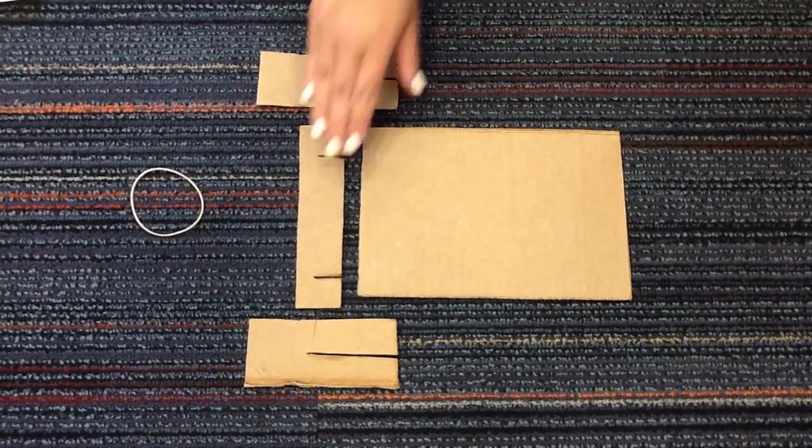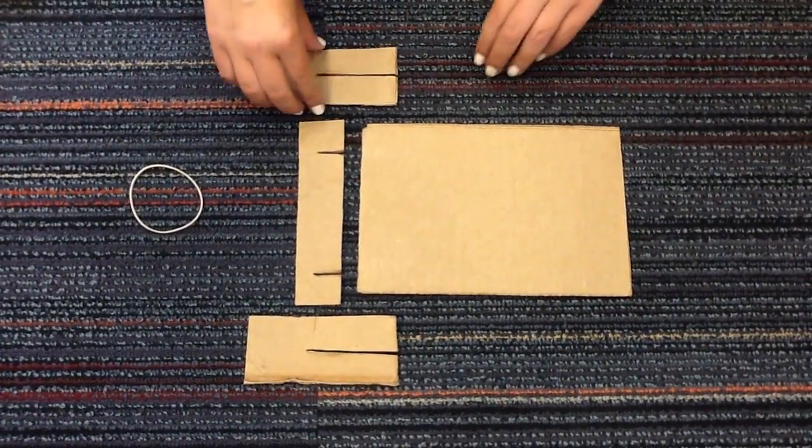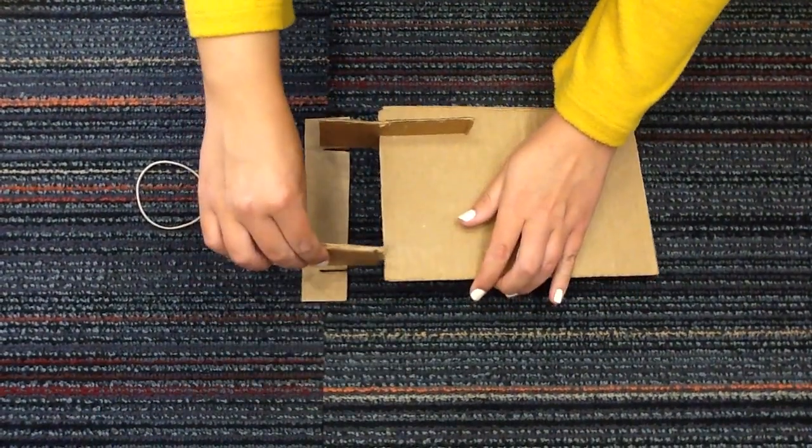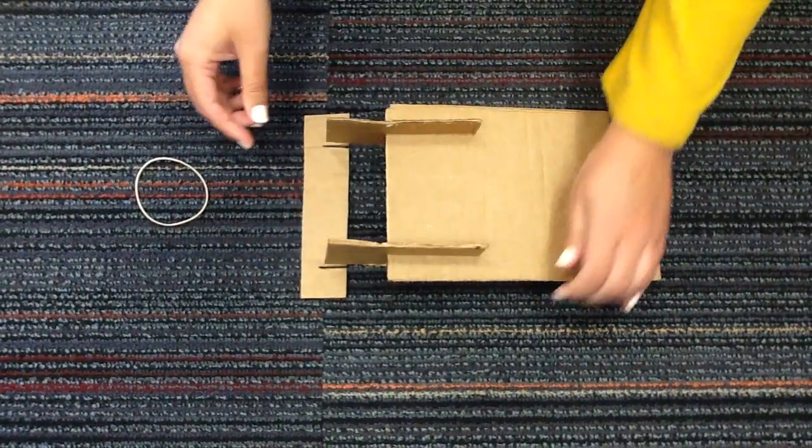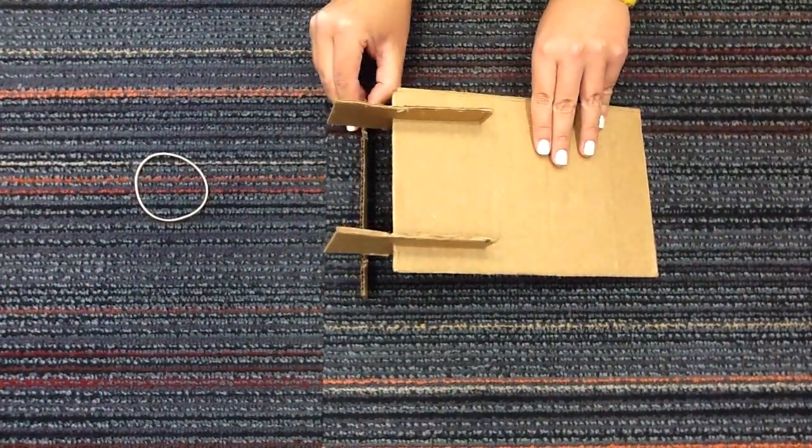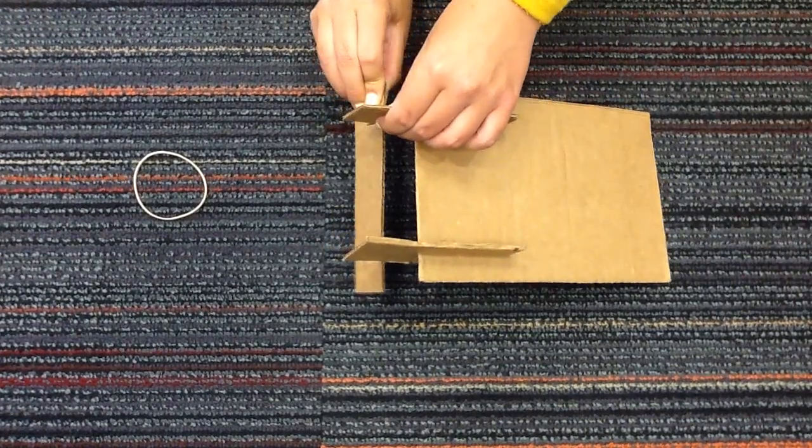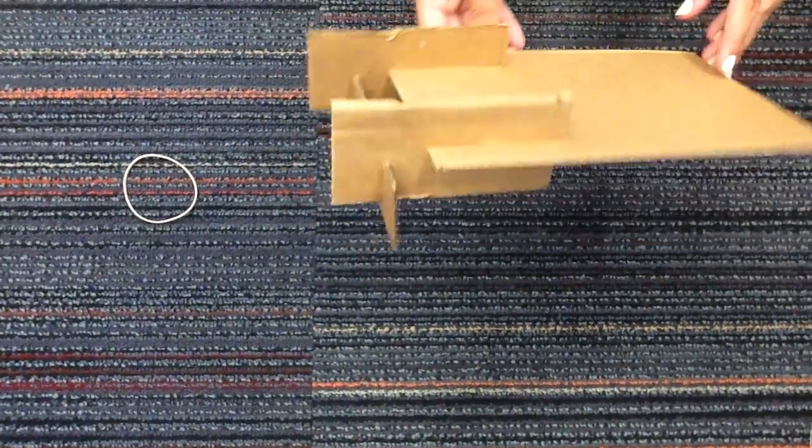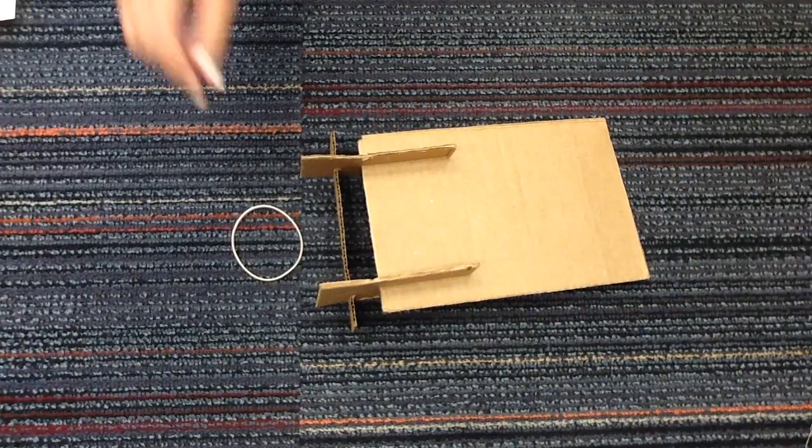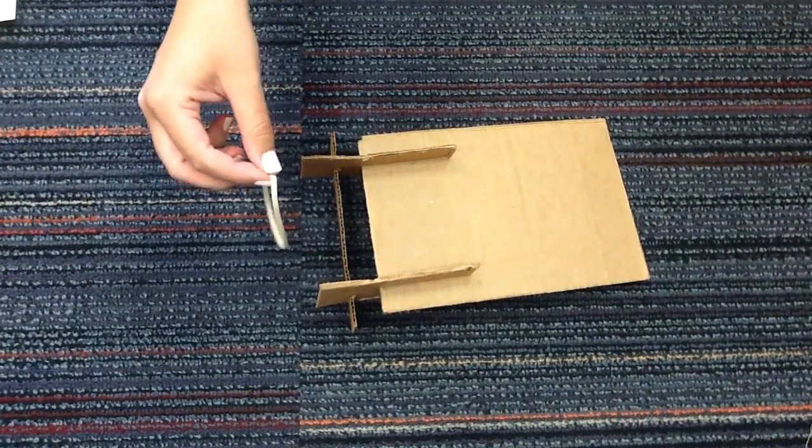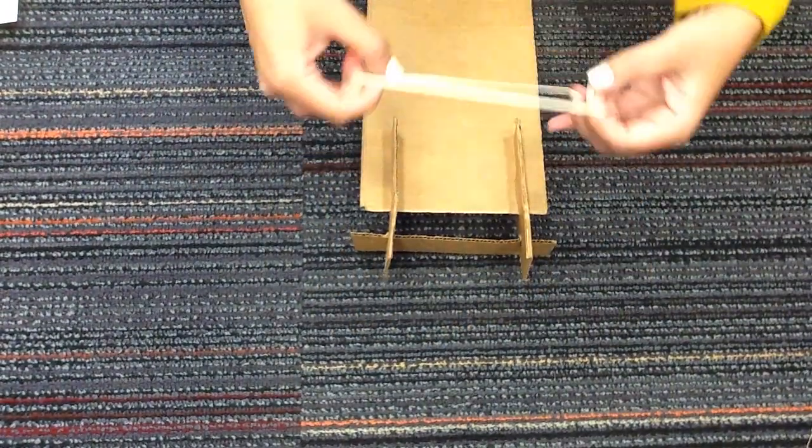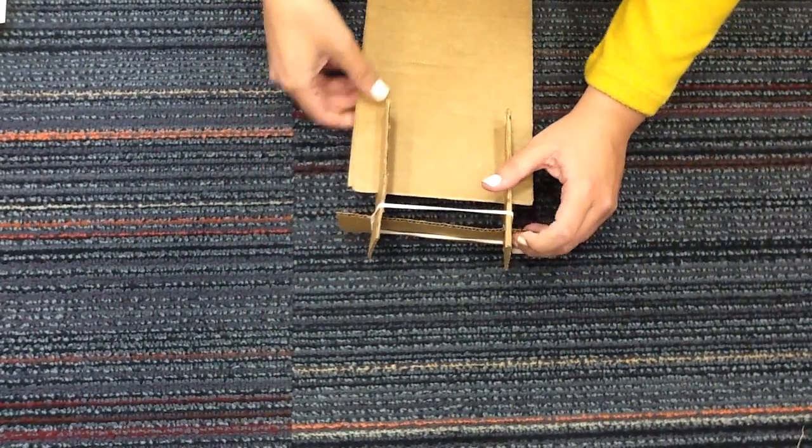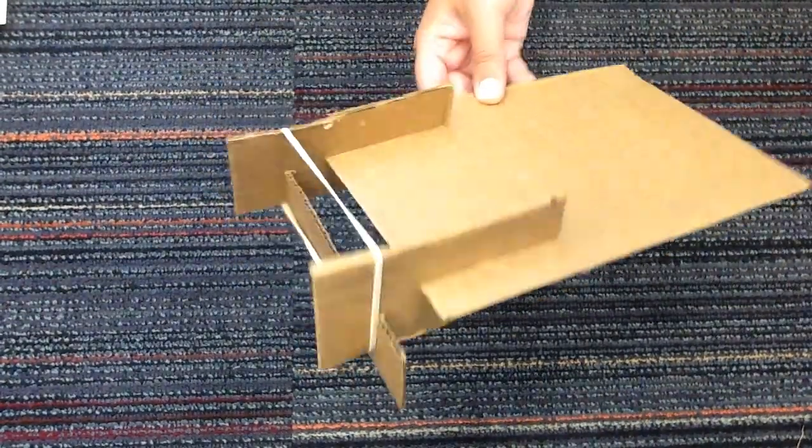Now you have all four pieces cut out, we need to put them together. Take your two side pieces and slide them at the base of your launcher. Now you need to add the stand. Your launcher should look like this. Now we need to loop the rubber band. Take your rubber band and place it in the middle of your launcher. Your launcher should look like this when complete.